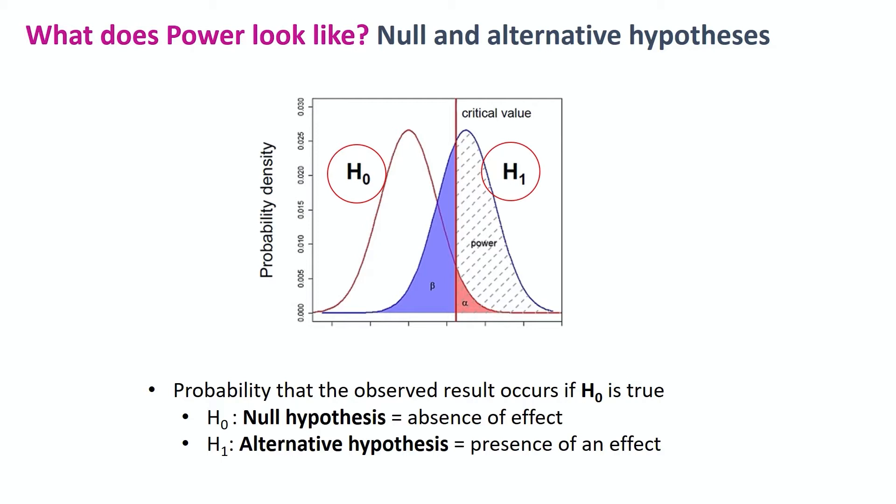We can also think of the red curve as, say, a control group and the blue one for a treatment group.